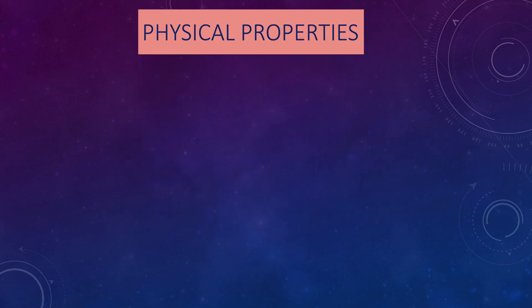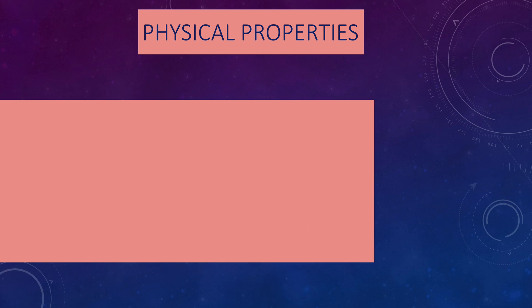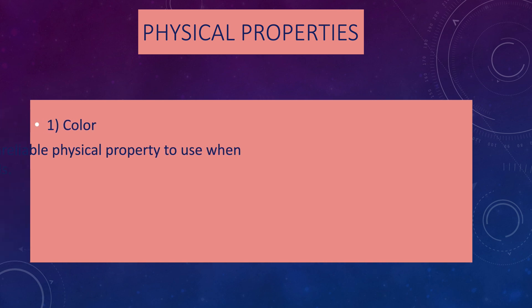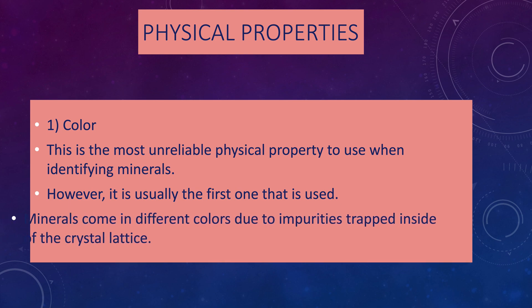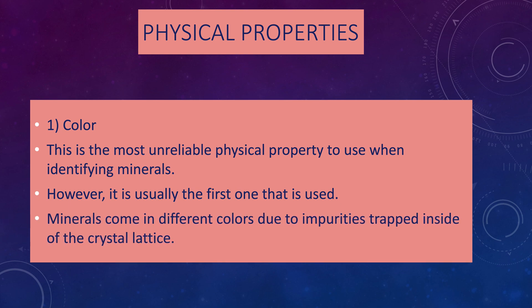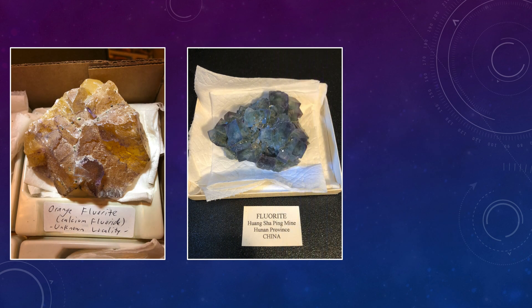The remainder of this presentation will focus on the physical properties of minerals. The first one is color — this is how you identify minerals — and it is the most unreliable physical property to use by itself, because you don't want to identify minerals by color alone. However, it's usually the first one you see when trying to identify minerals. Minerals can come in different colors due to impurities trapped inside their crystal lattice. These are pictures from my own personal mineral collection.